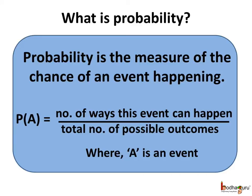The probability is the measure of the chance of an event happening. So, if A is an event, the probability of event A happening is represented by P(A) equal to number of ways this event can happen divided by total number of possible outcomes.